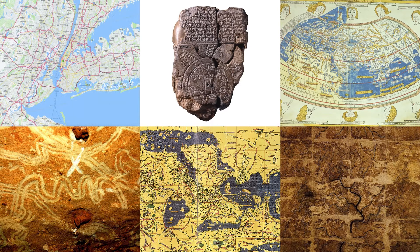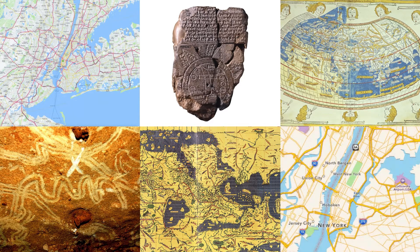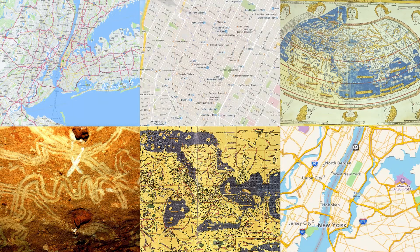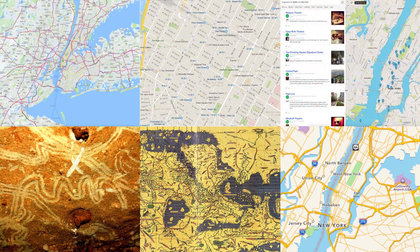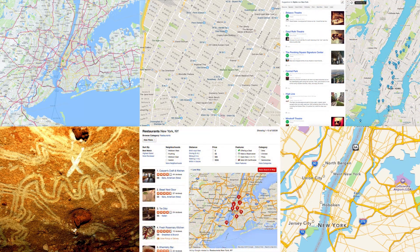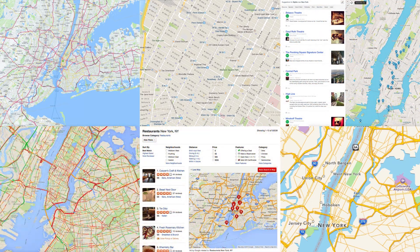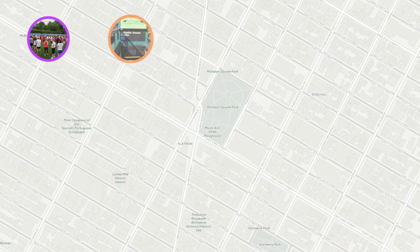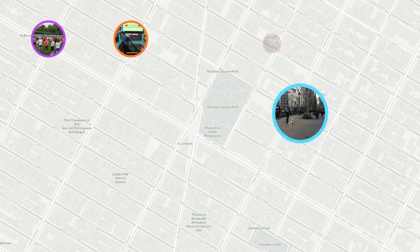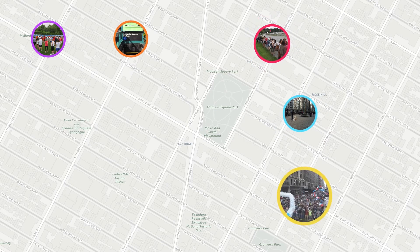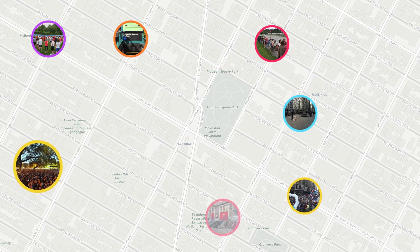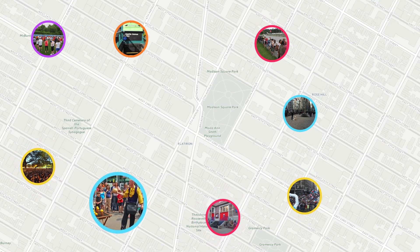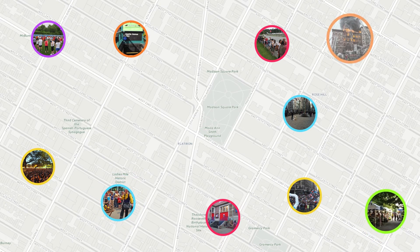Digital maps should therefore help us navigate the often hectic surroundings of places like New York City. However, they show restaurants, attractions, places of interest, and directions to these places. These things are useful, but New York City changes every second of every day. So where are the things on the map that change with it? The things that capture the living, breathing organism that is New York City?